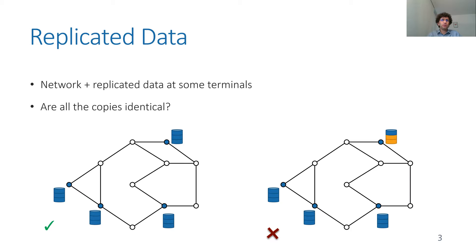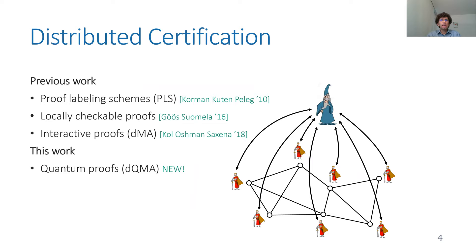We want that if all the replicas are okay, as in the left, everything is fine and we can continue computing as usual. If it's not okay, as in the right — one of the replicas goes corrupted — then some unit raises an alarm saying something is wrong, and we have to recompute or re-replicate it. This is the type of question studied under distributed certification or distributed verification, studied under names like proof labeling schemes, locally checkable proofs, and recently distributed interactive proofs.